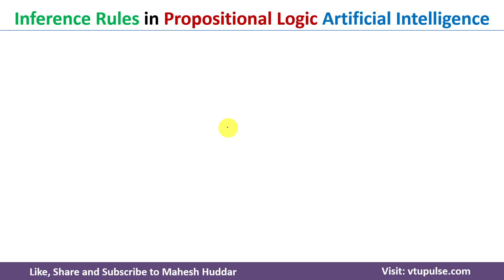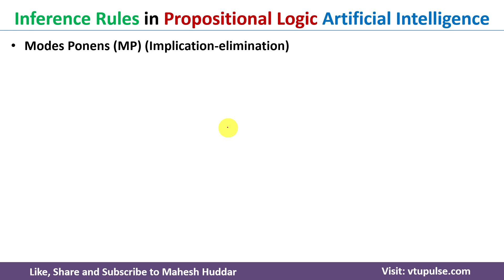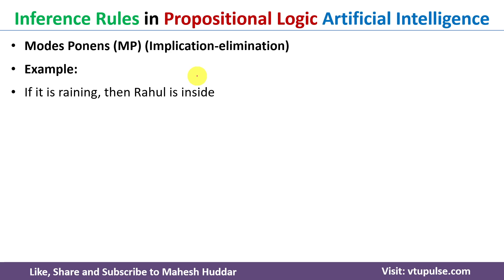The first inference rule is Modus Ponens, or the Implication Elimination Rule. We will take a simple example to understand it. We are given two statements: the first is 'If it is raining, then Rahul is inside,' and the second is 'It is raining.'